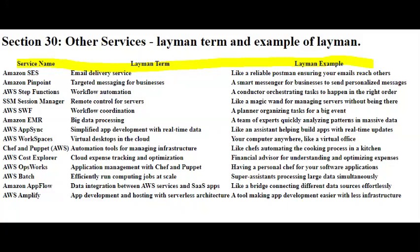Imagine you have a budget for your household expenses and you want to know where most of your money is being spent, whether it's on groceries, utilities, or entertainment. AWS Cost Explorer is similar but for your cloud usage. It shows you a breakdown of your spending, helping you identify areas where you're investing the most in AWS services. For instance, you can use AWS Cost Explorer to see if a specific type of service, like storage or computing power, is consuming a large part of your budget. This way, you can adjust your usage or find more cost-effective options, similar to how you might cut back on certain expenses at home if you notice you're overspending in a particular category. In short, AWS Cost Explorer is your financial tool for managing and optimizing your AWS cloud expenses.